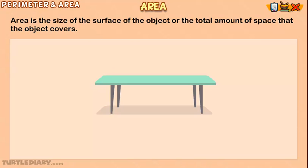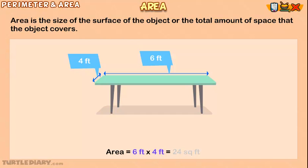You are buying a tablecloth for your table. You want to know the size of the surface of the table so that you make sure you get one big enough. Area equals 6 feet times 4 feet equals 24 square feet.